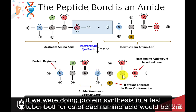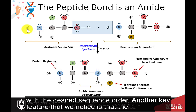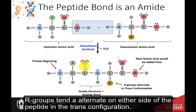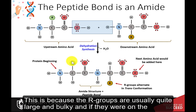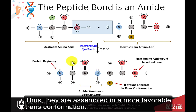If we were doing protein synthesis in a test tube, both ends of each amino acid would be reactive and create great difficulty in being able to create a peptide with the desired sequence order. Another key feature is that the R groups tend to alternate on either side of the peptide in the trans configuration. This is because the R groups are usually quite large and bulky, and if they were on the same side of the growing peptide, they would create too much steric hindrance to be stable. Thus they are assembled in a more favorable trans conformation.